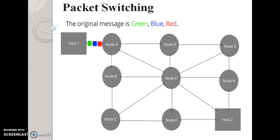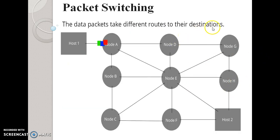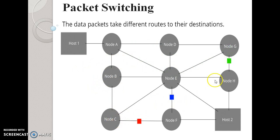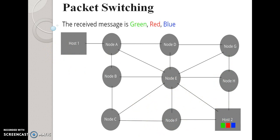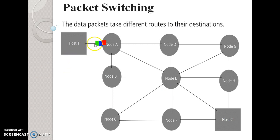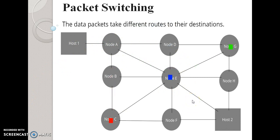The third technique is packet switching. You can see the animation here — red, blue, and green packets travel from source to destination through different paths in the network. Data are transmitted in short blocks called packets. The maximum size of a packet is 1000 bytes.